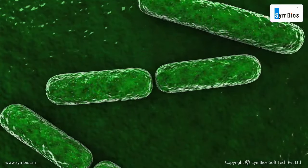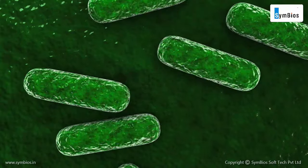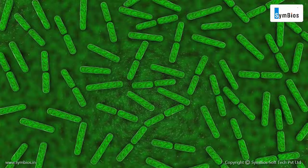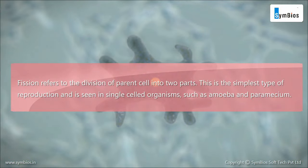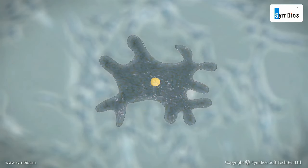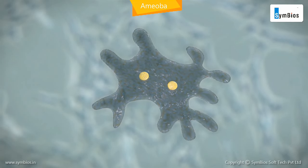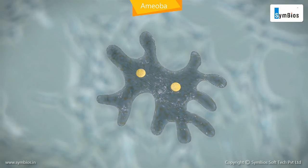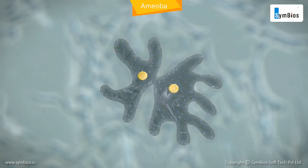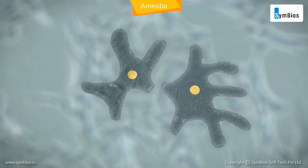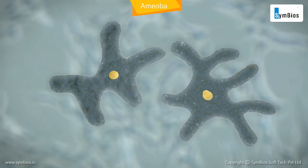Asexual reproduction is a form of reproduction that involves the production of a new organism by a single parent. Fission refers to the division of parent cells into two parts. This is the simplest type of reproduction and is seen in single-celled organisms such as amoeba and paramecium. In amoeba, the nucleus first divides into two equal parts, followed by the division of the cytoplasm. Thus the two daughter amoeba formed grow and attain full size and then split again.